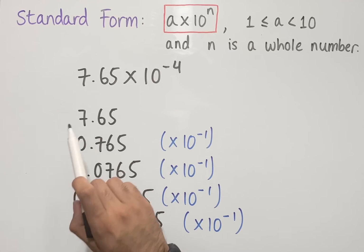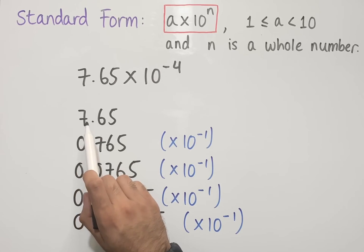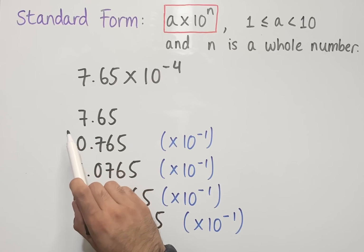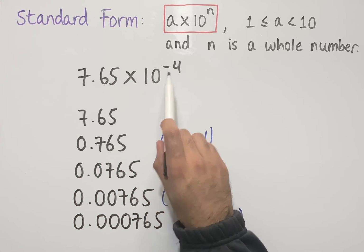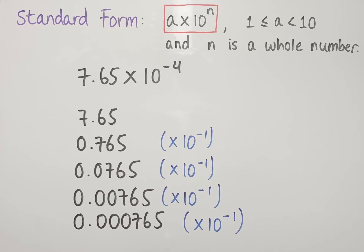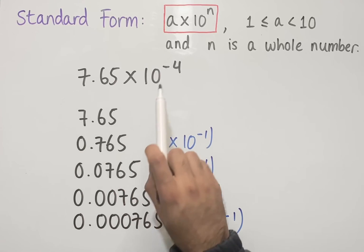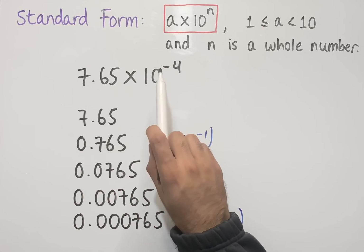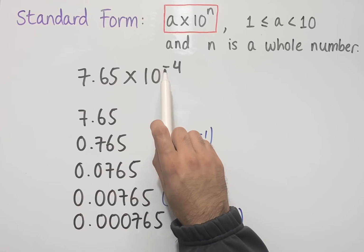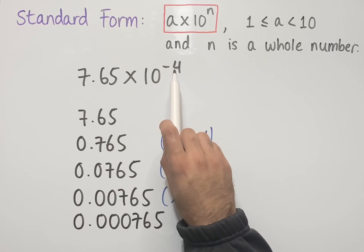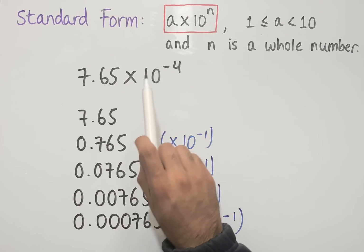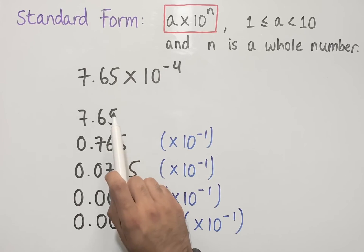We can also think of this as moving the decimal point to the left when we have a negative power of 10. The number of spaces the decimal point moves depends on what power of 10 we have — so in this case, with negative 4, we move 4 spaces to the left.